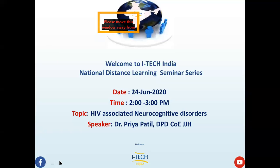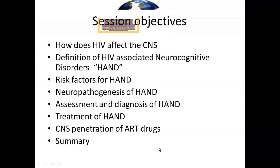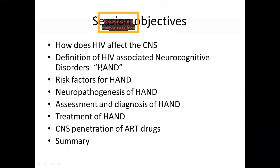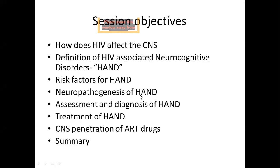Now coming to this lecture. The objectives: we are going to discuss HIV Associated Neurocognitive Disorders. Before that we will see how HIV affects the CNS, then the definition of HIV associated neurocognitive disorders — referred to as HAND. Then risk factors, neuropathogenesis, assessment and diagnosis of HAND, treatment of HAND, an important aspect of CNS penetration of ART drugs, and then the summary.